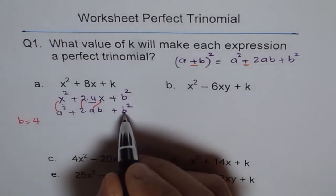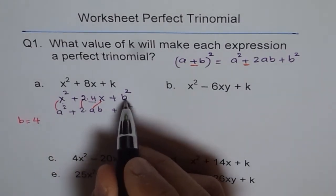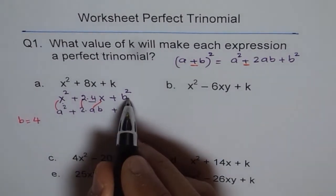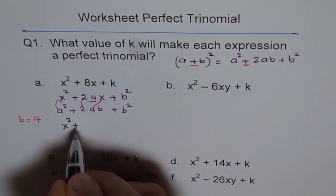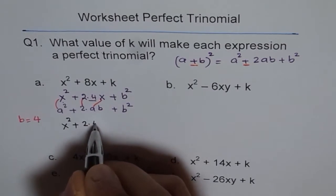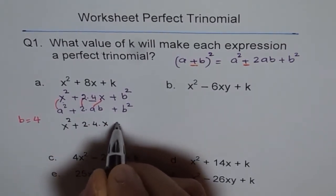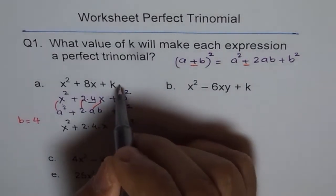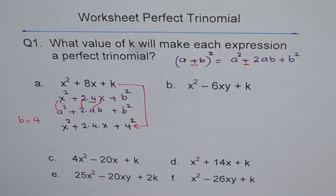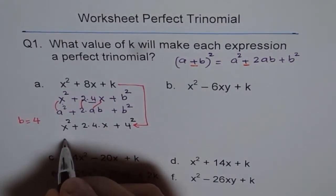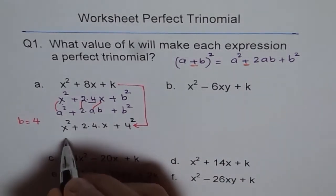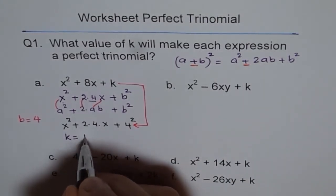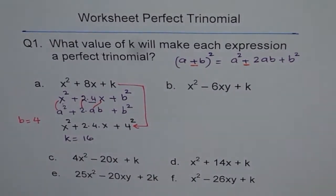Since b = 4, k must equal b² = 4² = 16. So k = 16. The expression becomes x² + 2(4)(x) + 4², and k is 16.